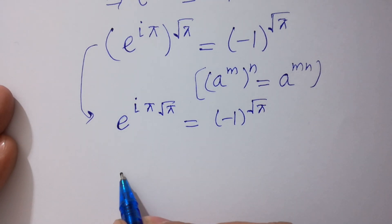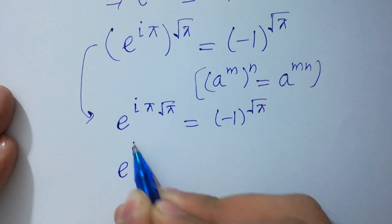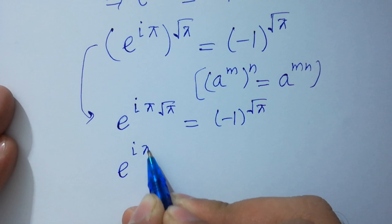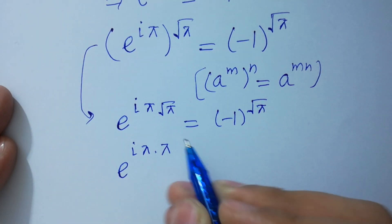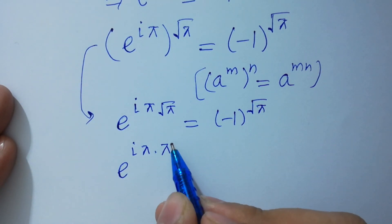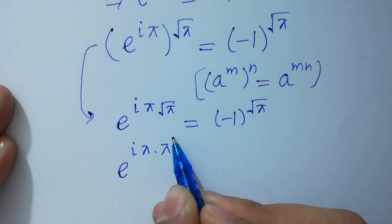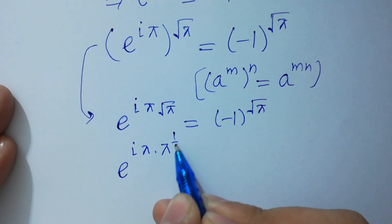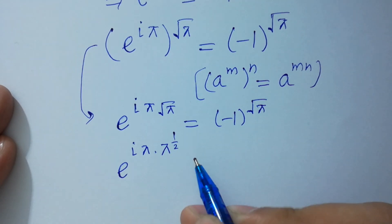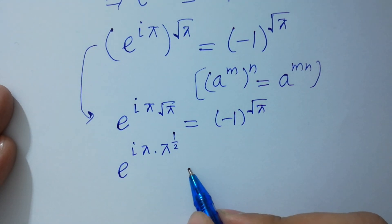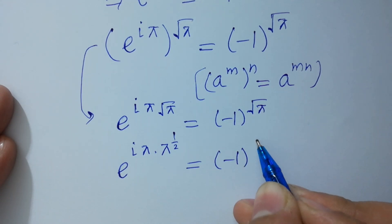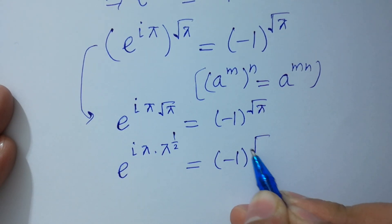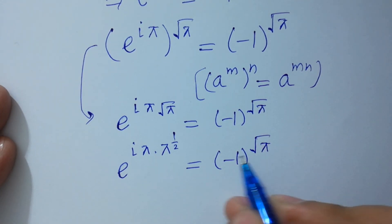e to the power i*pi*sqrt(pi), which is pi to the power 1/2, equals minus 1 to the power square root of pi, as it is. This simplifies the exponent to i*pi^(3/2).